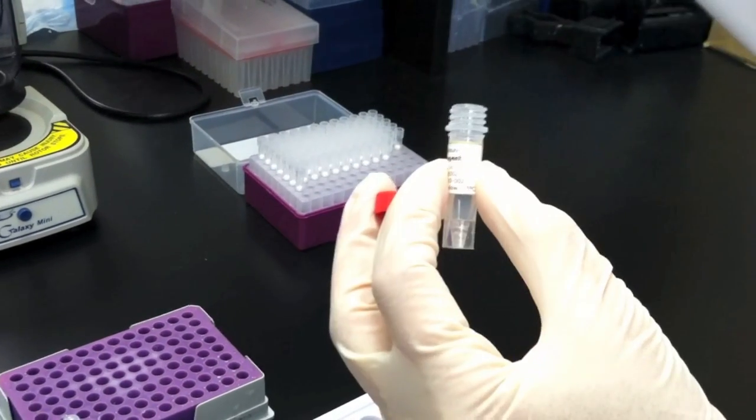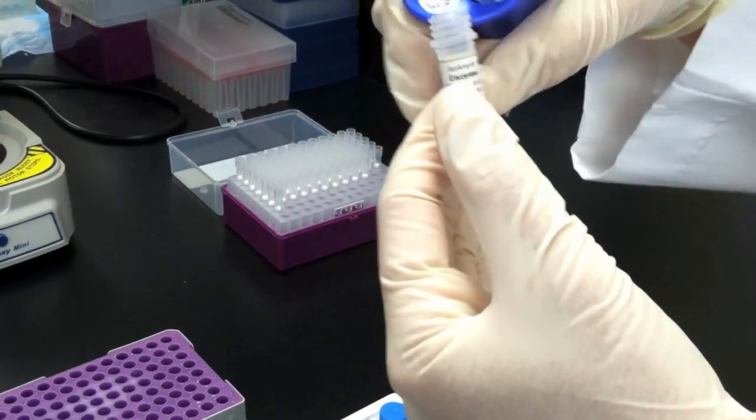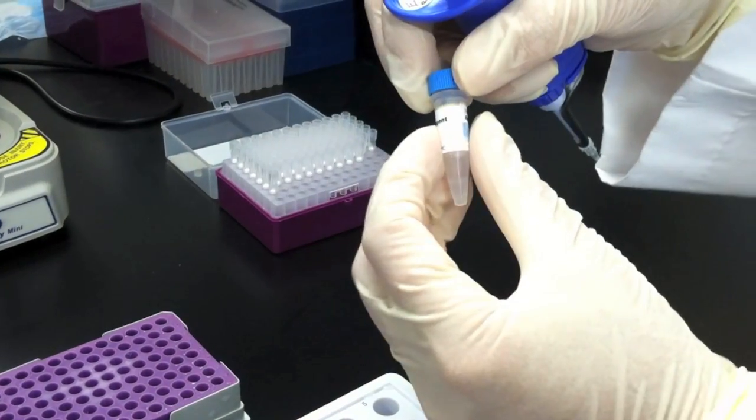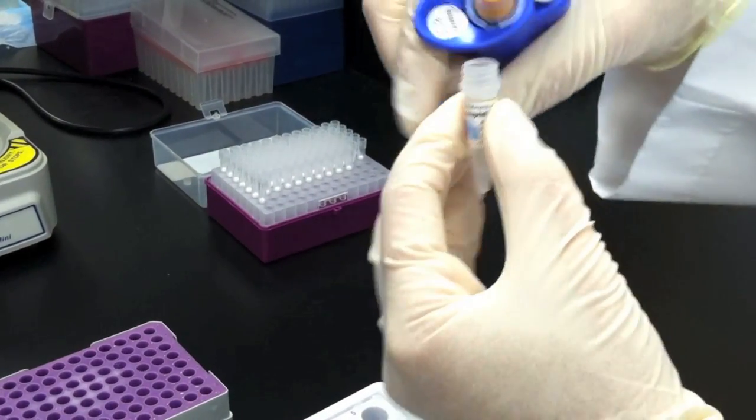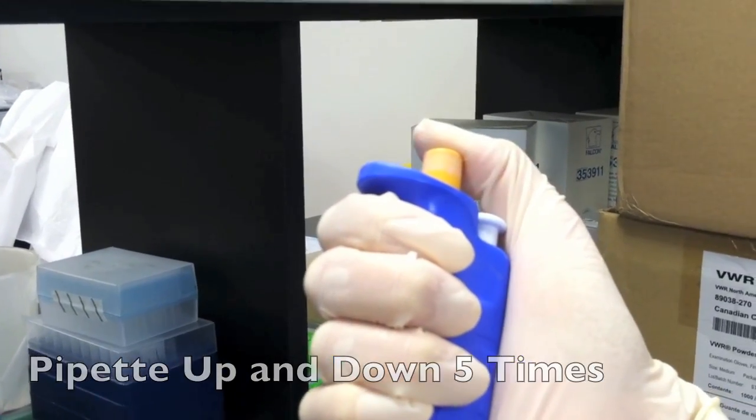Prepare the master mix by transferring 25 microliters of enzyme reagent, the red cap, to the amplification reagent tube, the blue cap. You must mix the solution thoroughly by pipetting the solution up and down at least 5 times.